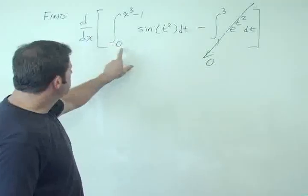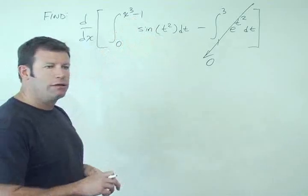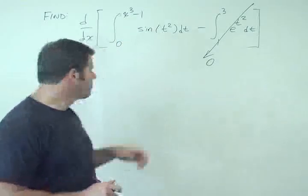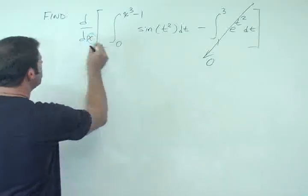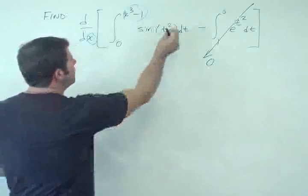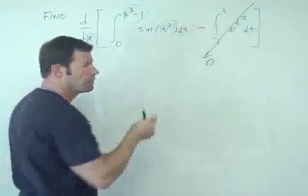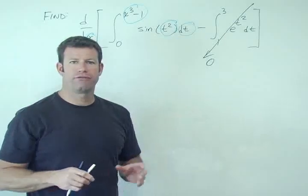That only leaves us with this bizarre thing: 0 to x³ - 1, sin(t²) dt. So now do you notice a pattern? We have an x here, we have some expression with x here, we have a t here and a dt here. There should be some beacon going off in your head.